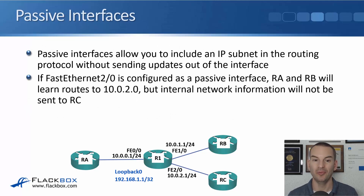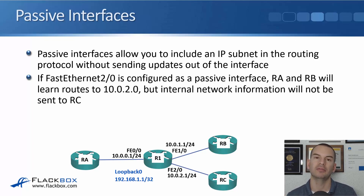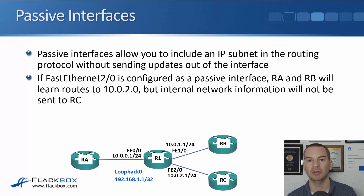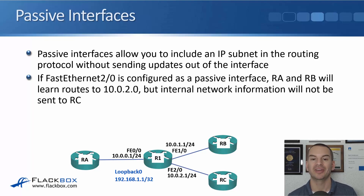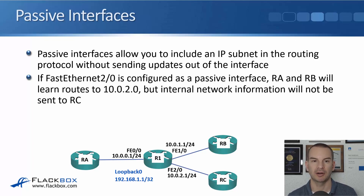So what if we actually need RA and RB to learn a route to 10.0.2.0? That's where passive interfaces come in. Passive interfaces allow you to include an IP subnet in the routing protocol without sending updates out of that interface. If FastEthernet 2/0 is configured as a passive interface, RA and RB will learn routes to 10.0.2.0, but internal network information will not be sent out to RC.